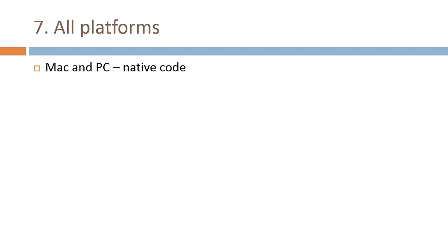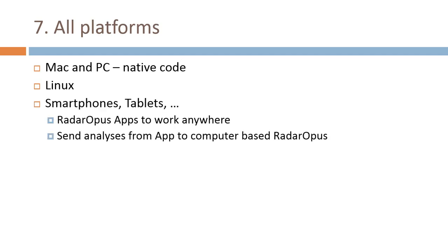Our dream was also to be on all platforms — not only on Mac and PC in native code without emulation, but also offering a Linux version when the request is supported by enough people. It also means users can use smartphones and tablets to have RADAR OPUS work. We have already a first RADAR OPUS app launched, which allows people to work anywhere with just a smartphone or tablet. When work is done on the tablet, they can send the analysis from the app to the computer at home to save it, edit it, put it in a patient file, and retrieve it at the next consultation.